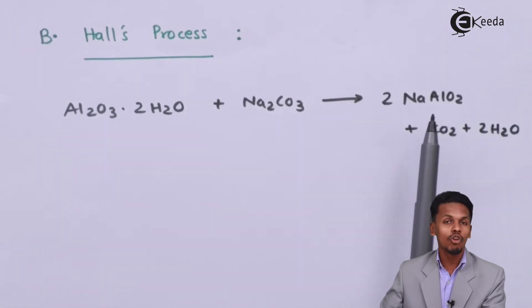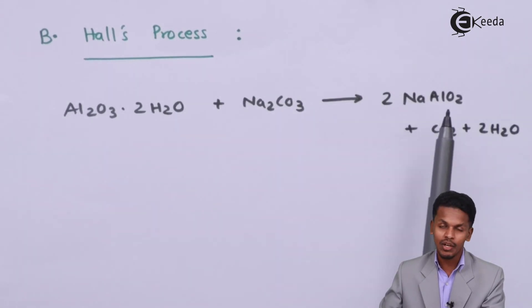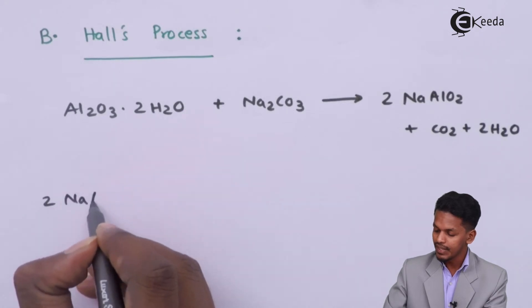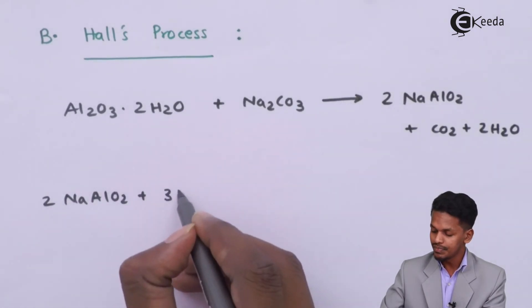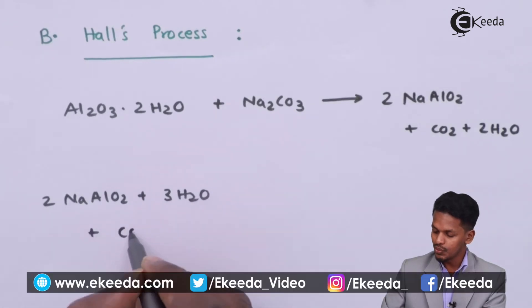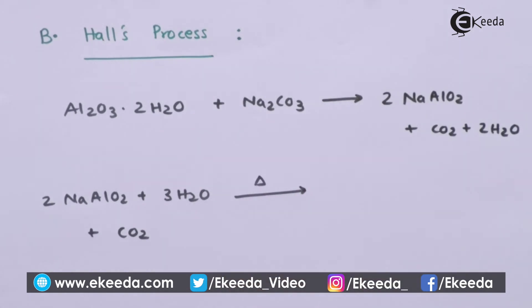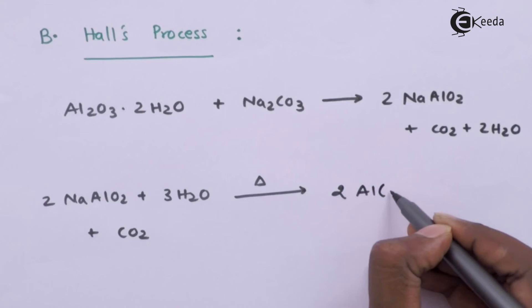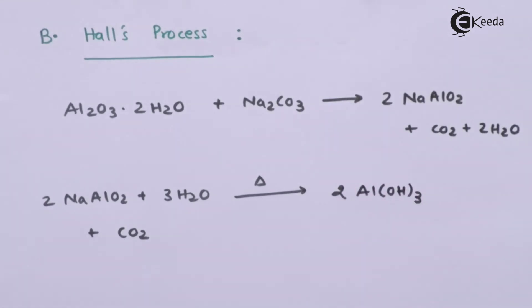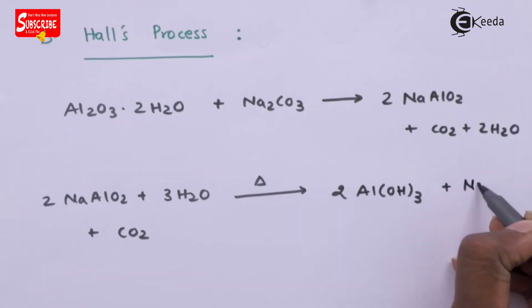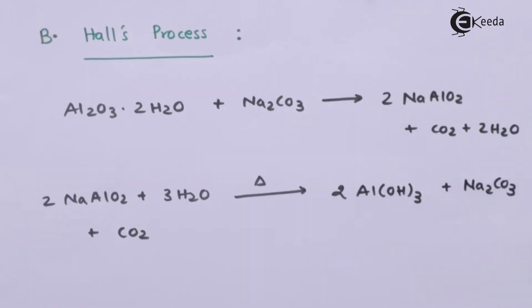The soluble sodium meta-aluminate is then treated with three moles of H₂O along with CO₂. At higher temperature, the product obtained is two moles of Al(OH)₃. The by-product obtained in Hall's process is Na₂CO₃, whereas in the corresponding step of Bayer's process the by-product was NaOH.